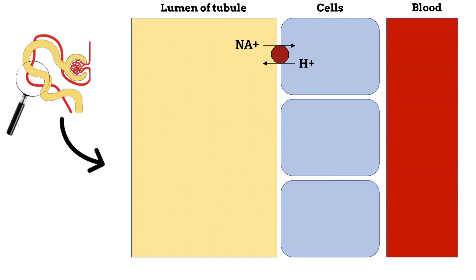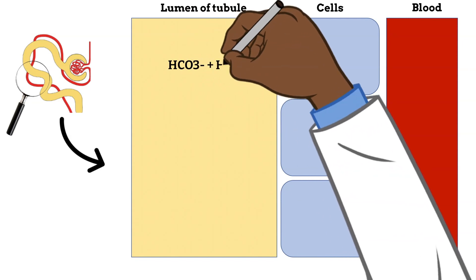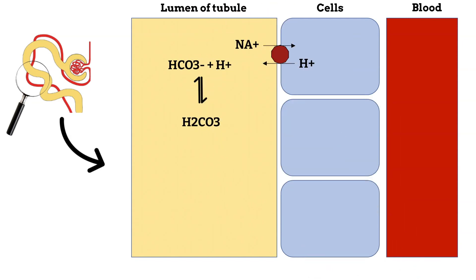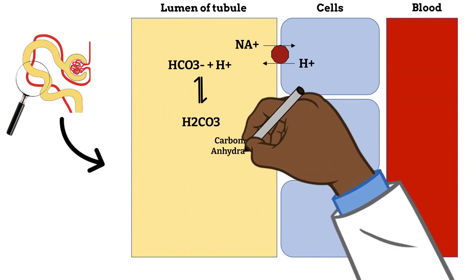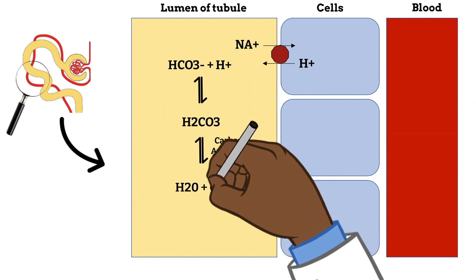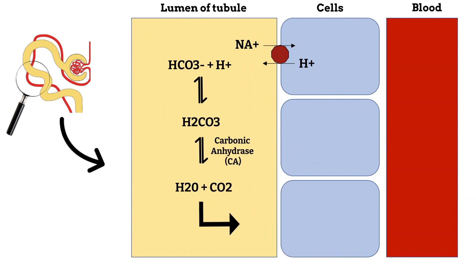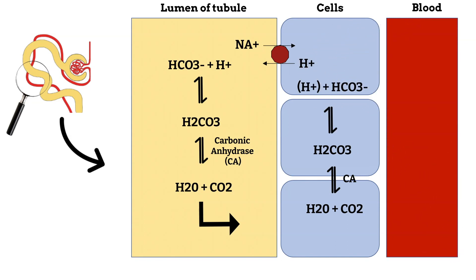The H+ ions, or hydrogen ions, in the urine combine with bicarbonate to form carbonic acid. This reaction is at equilibrium and can shift back and forth, making either carbonic acid or bicarbonate and one hydrogen ion, depending on the body's needs. Carbonic anhydrase in the urine converts carbonic acid to water and carbon dioxide. Water and carbon dioxide enter the intracellular space by diffusion. The intracellular carbonic anhydrase enzyme converts water and carbon dioxide back to carbonic acid, which dissociates into H+ ions and bicarbonate. Bicarbonate then moves into the blood.